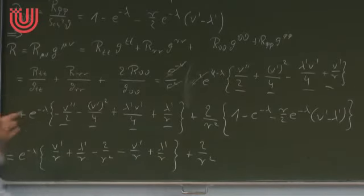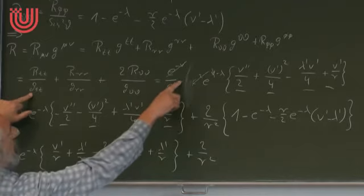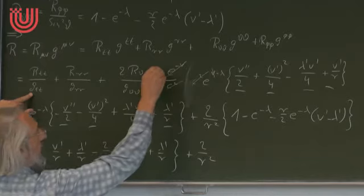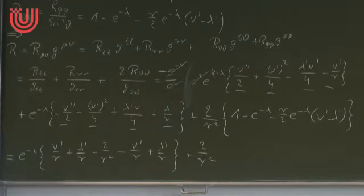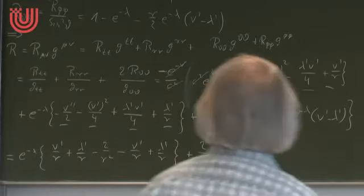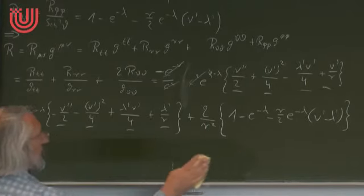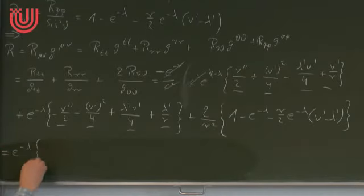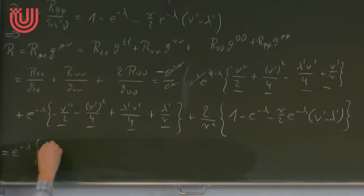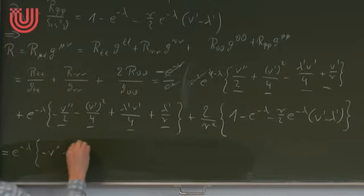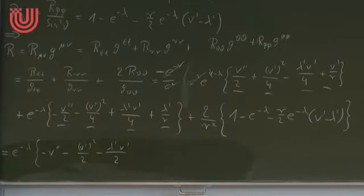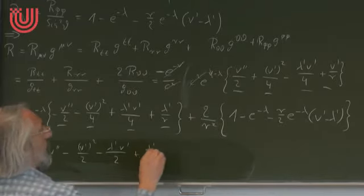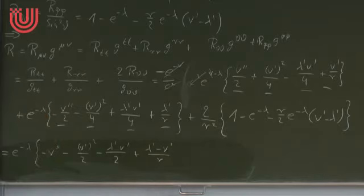Looking at F1, multiplied by r²: d/dr[r(1 − e^{−λ})] = (8πG/c²) ρ r². The left-hand side is the derivative of r(1 − e^{−λ}) and the right is the derivative of (8πG/c²) ρ r³/3. Integrating and requiring regularity at the center (no singularities, so the integration constant C = 0), we get: e^{−λ} = 1 − (8πG/c²)(ρ/3)r².